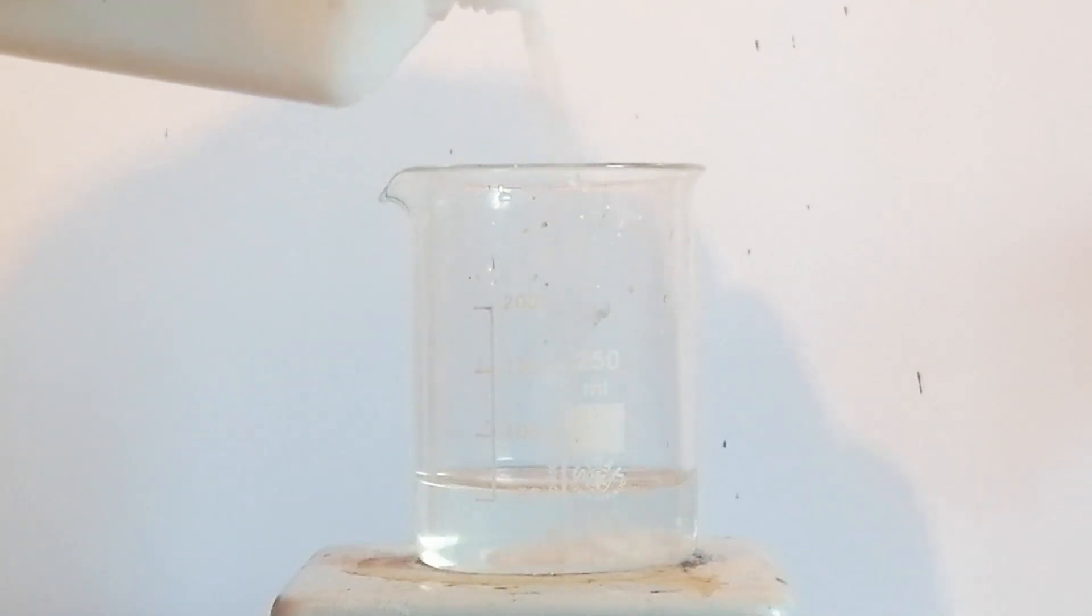First, to a beaker filled with distilled water I've added some sodium hydroxide. Sodium hydroxide is used to create a strongly alkaline environment. I've turned on strong stirring to dissolve the hydroxide faster.